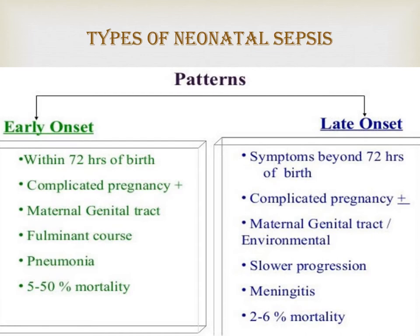Maternal factors that increase the risk of neonatal sepsis include chorioamnionitis, GBS colonization of the female genital tract, delivery before 37 weeks, and prolonged rupture of membranes greater than 18 hours. Late onset sepsis usually occurs via transmission of pathogens from the surrounding environment after delivery, such as contact from healthcare workers or caregivers. A percentage of late onset sepsis may also be caused by late manifestation of vertically transmitted infection. Infants requiring intravascular catheter insertion or other invasive procedures are also at risk.